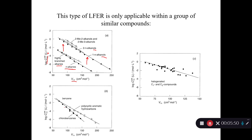If chemicals have the same molar volume but have an OH group, the solubility is boosted by somewhere around three orders of magnitude. Here's an example for the benzenes — chlorinated benzenes and PAHs. They both have benzene in common, so both lines run through the benzene point. The R-squared must be pretty good because the points are really clustering along the line. But for the halogenated C1 and C2 compounds, there's a lot more scatter.